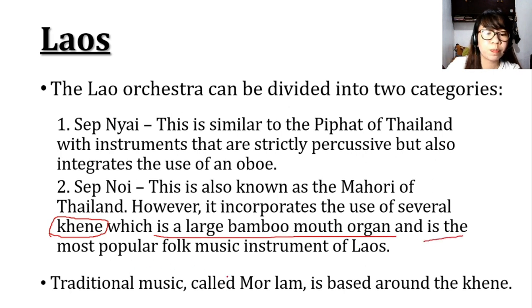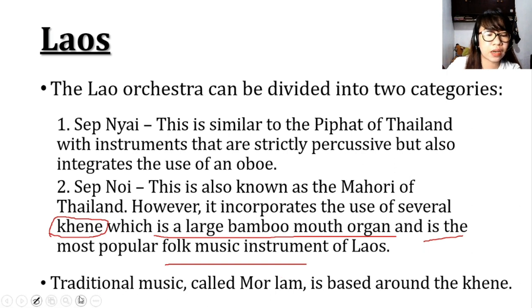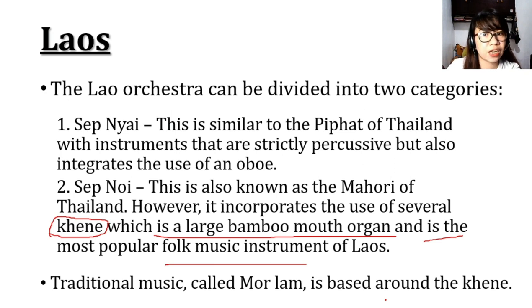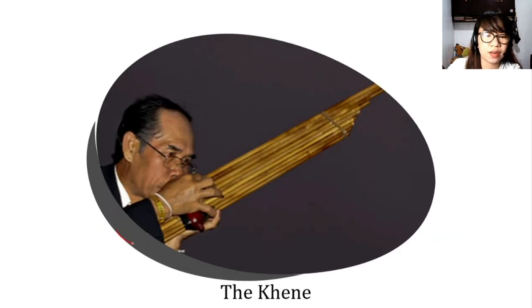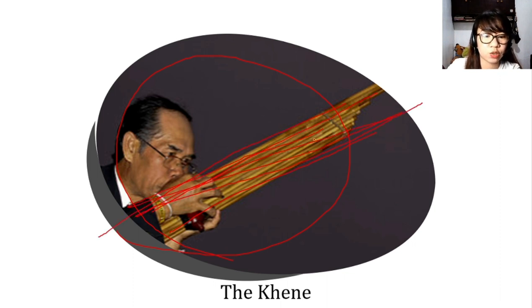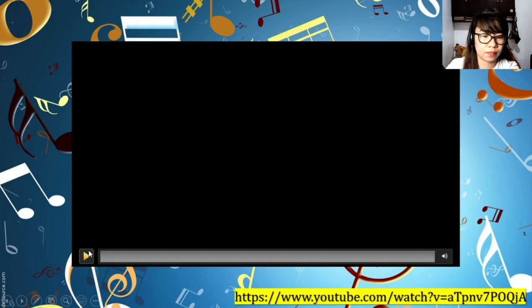The Khaen is a large bamboo mouth organ and is the most popular folk music instrument of Laos — it's essentially a woodwind instrument. The traditional music called Morlam is based around the Khaen, meaning traditional Morlam music is performed using the Khaen. So the Khaen looks like bamboo pipes bundled together; you blow air into it to produce sound.